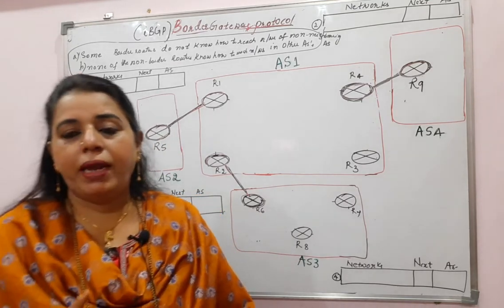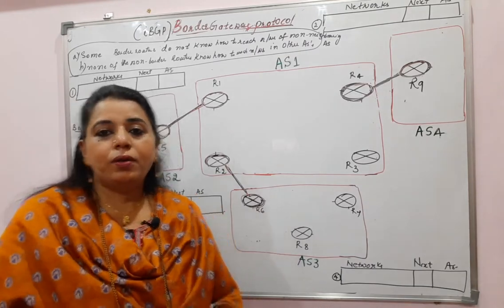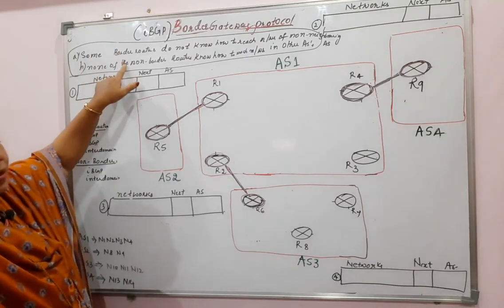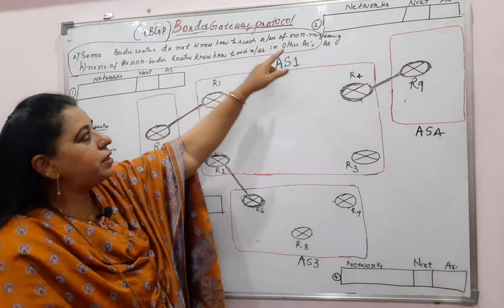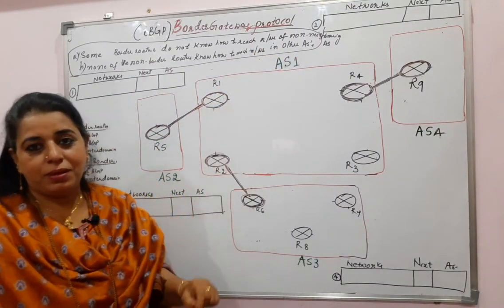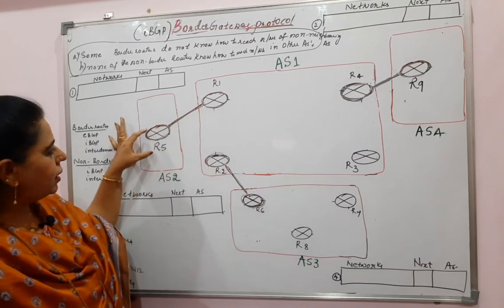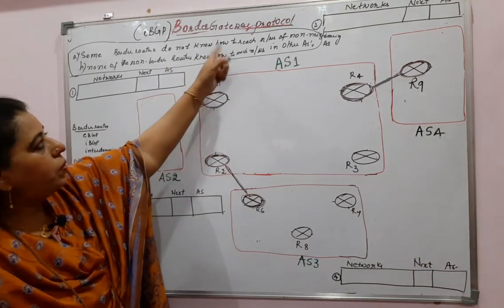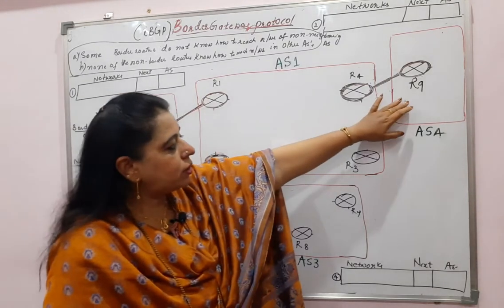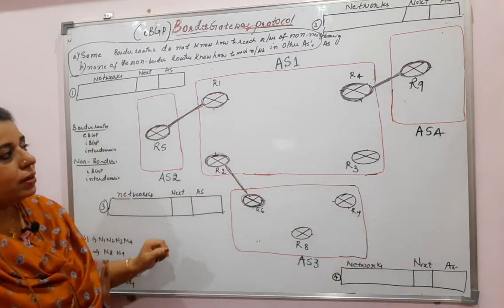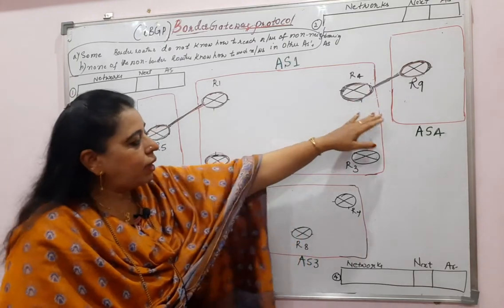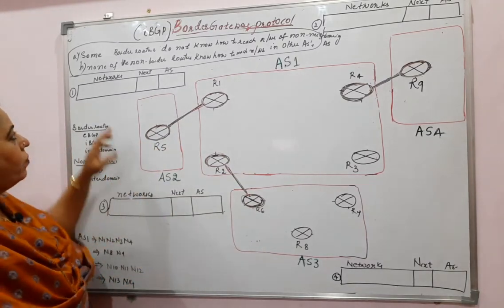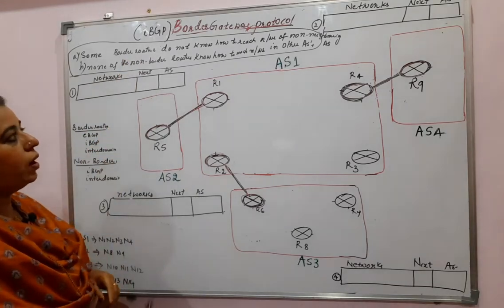The main reason we are going for Internal Border Gateway Protocol is to address two problems in External Border Gateway Protocol. First, some border routers do not know how to reach networks of non-neighboring autonomous systems. For example, AS2 is a neighbor to AS1 but does not know how to reach AS4 and AS3. Similarly, AS4 is a neighbor to AS1 but does not know how to reach AS3 and AS2.